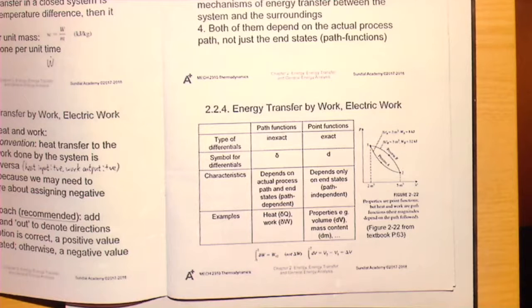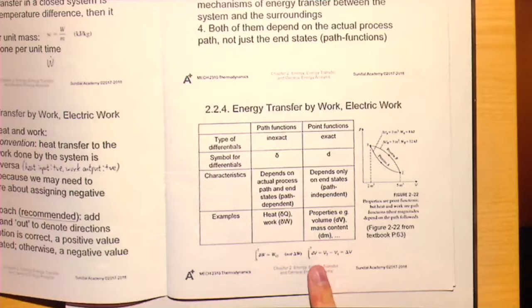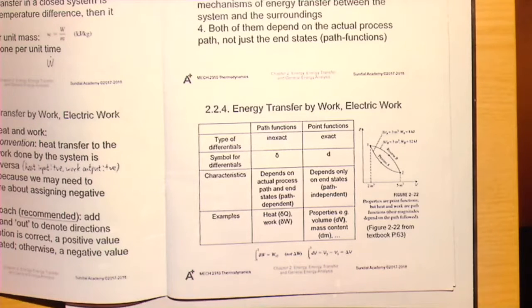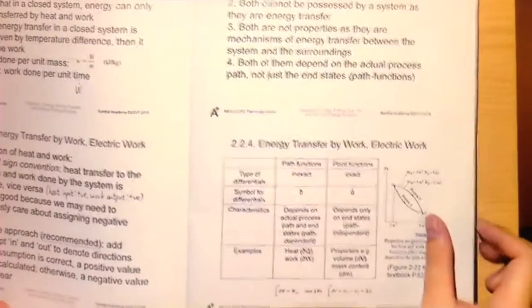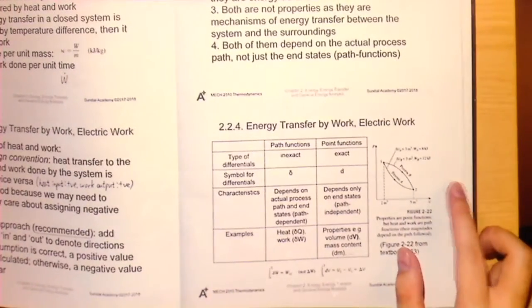For a point function like volume, the integral of dV from one to two equals ΔV, which can be written as V₂ minus V₁. This table provides a clear comparison between path functions and point functions.